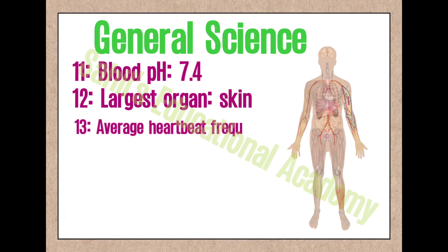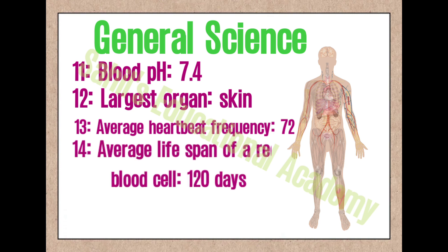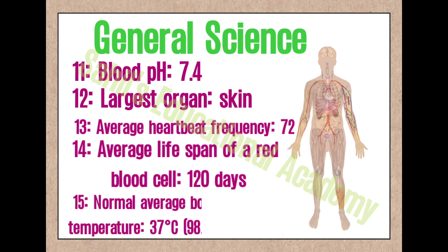13. Average heartbeat frequency: 72. 14. Average lifespan of a red blood cell: 120 days. 15. Normal average body temperature: 37 degrees Celsius, 98.4 degrees Fahrenheit.